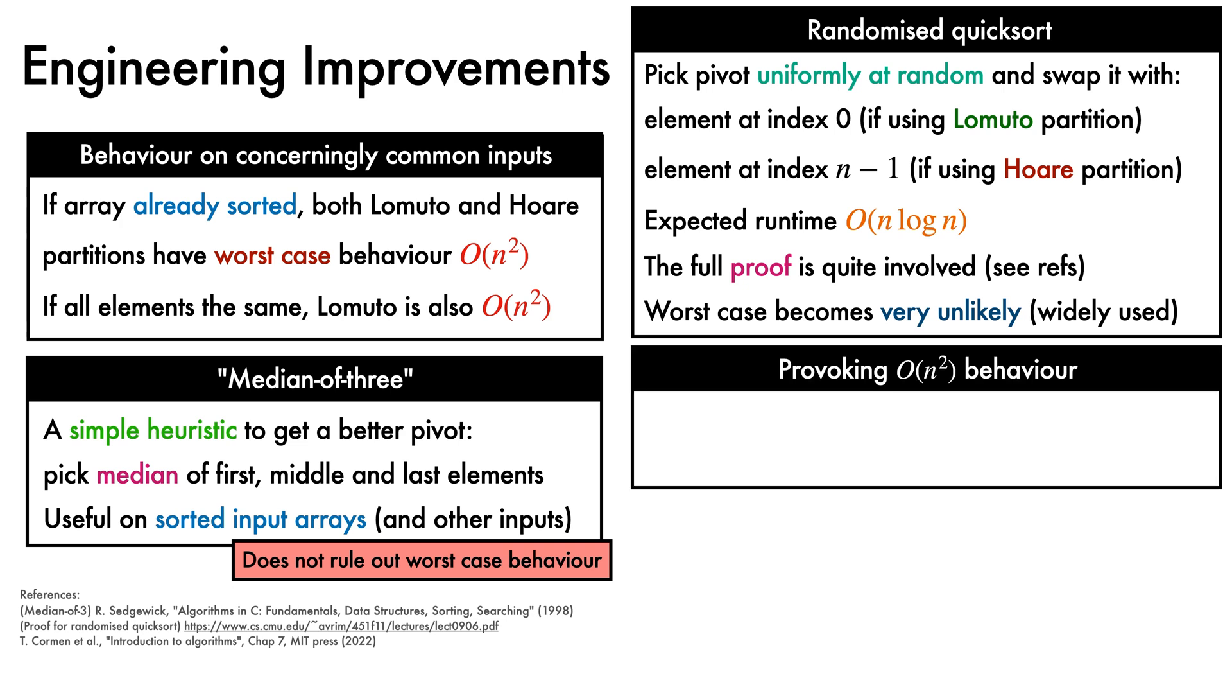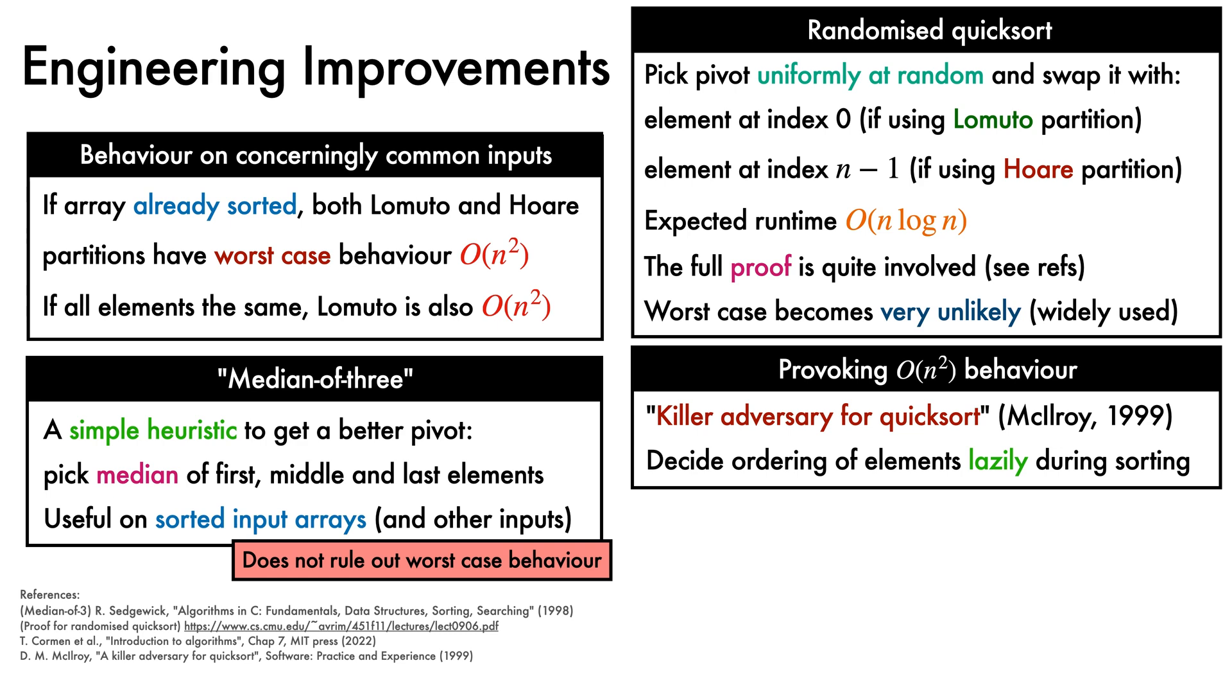That said, in general it is hard to fully escape the possibility of quadratic behaviour with quicksort. In his so-called killer adversary for quicksort, Douglas McElroy proposed an algorithm that induced quadratic behaviour on a range of popular quicksort implementations, by cleverly deciding the ordering of elements lazily during sorting, in such a way that quicksort has to do a huge amount of work.